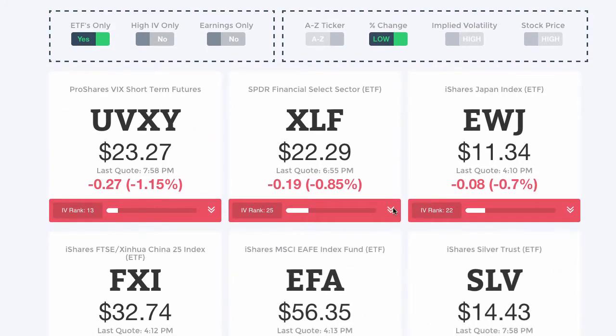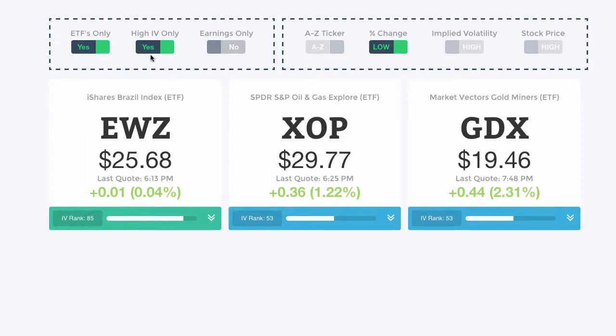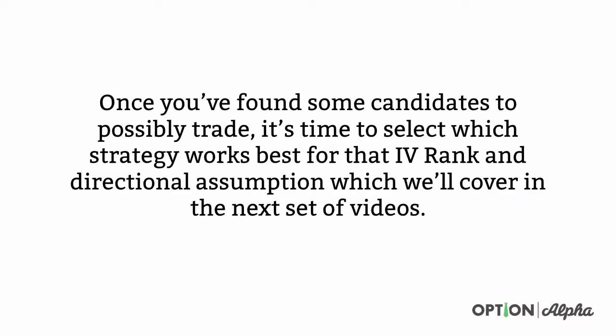There are many ways that you can obviously scan for trades — we're not saying this is the only way. But it doesn't matter which direction you end up trading something, as long as your portfolio is overall neutral. In our opinion, you should be trading a lot more short premium strategies, because that's where the numbers and the math are — and that's why we constantly give you these tools here at Option Alpha to quickly scan and filter for trades, ETFs, and stocks that best fit your portfolio. Once you've found some candidates to possibly trade, it's time to select which strategy works best for that IV rank and the directional assumption, which we'll cover in the next set of videos.